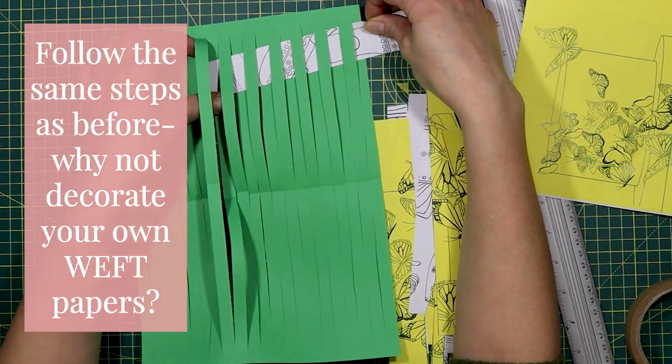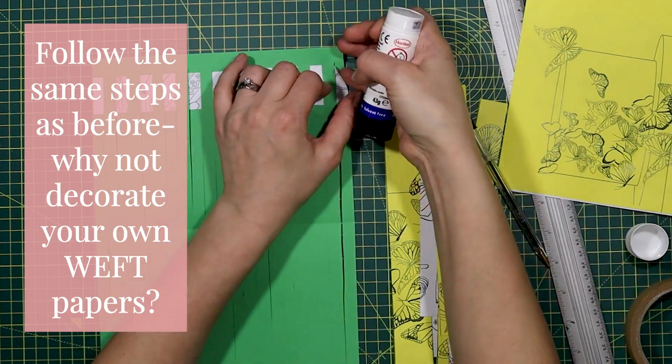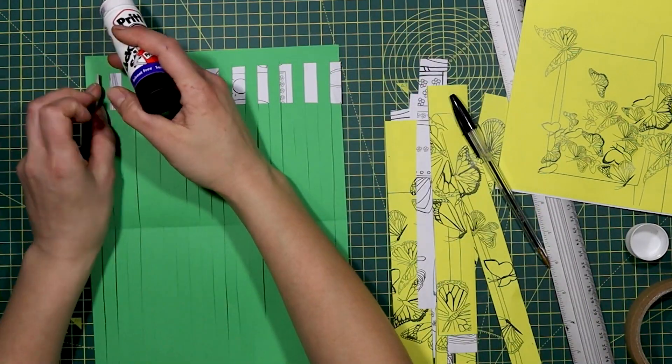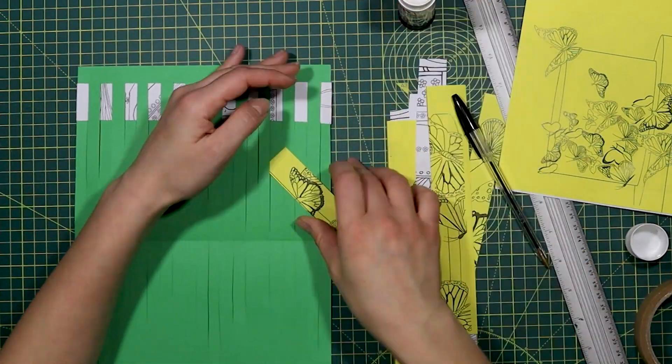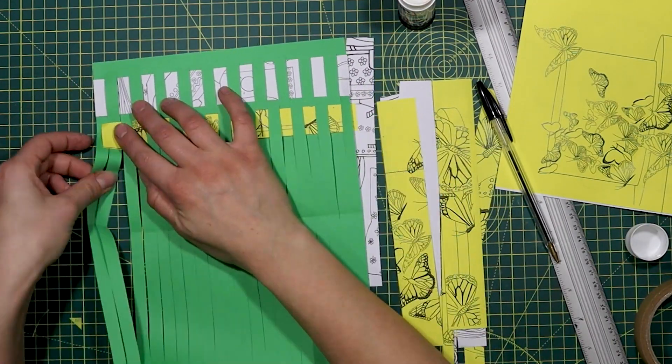Simply follow the same steps as before. You'll find it's closer together, so it will give you a different pattern or design. Why not create your own papers? Why not draw your own illustrations onto a piece of paper and then use that as your weft? The possibilities really are endless with this.